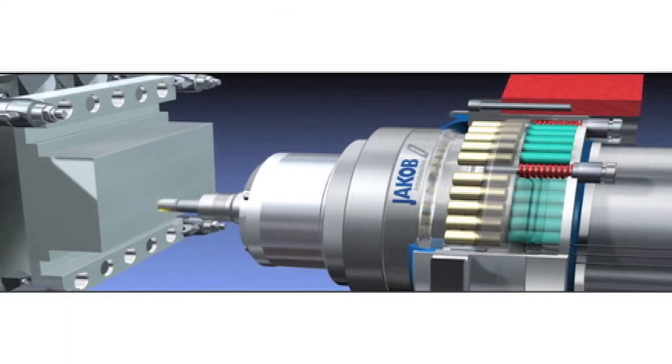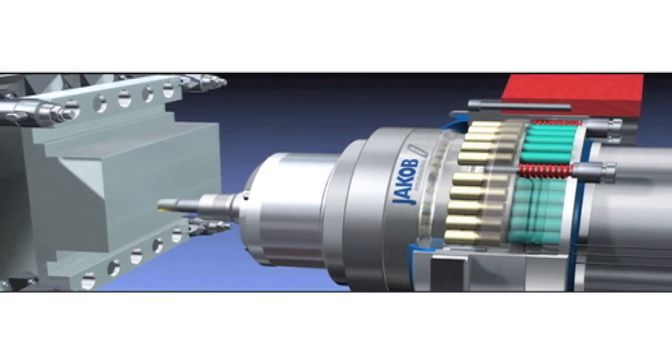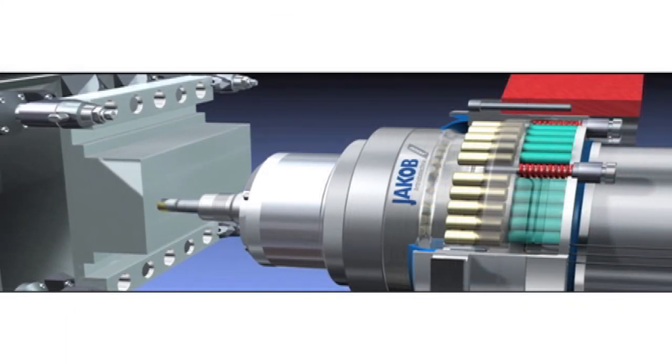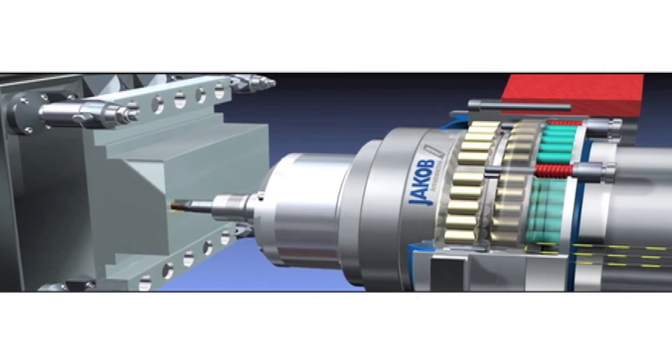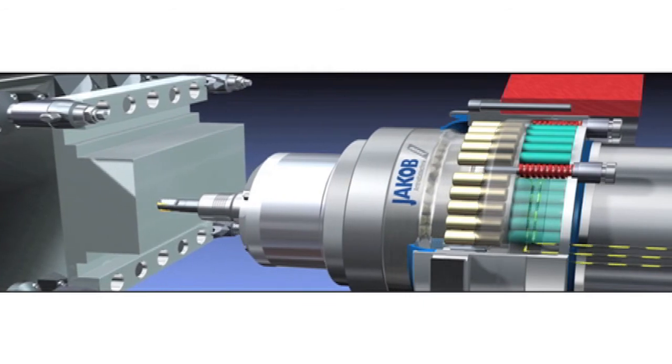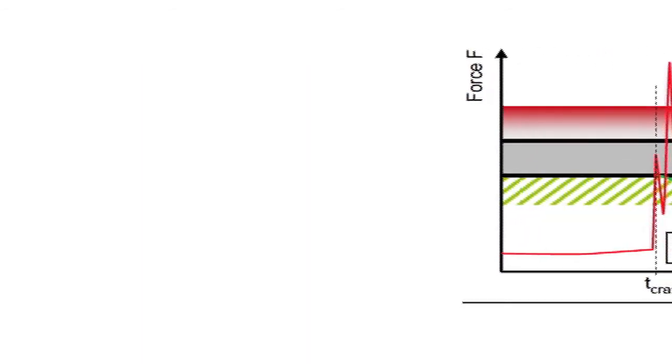In addition, decoupling the spindle from the machine structure reduces machine stiffness, decreasing the collision force. To avoid a loss of machine productivity, this stiffness reduction does not occur until a critical force threshold is exceeded.